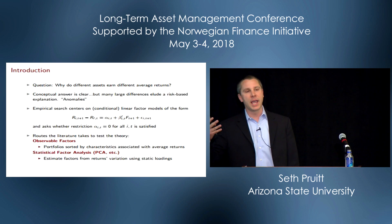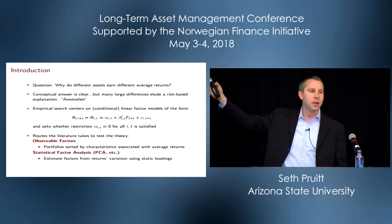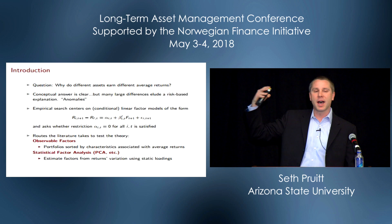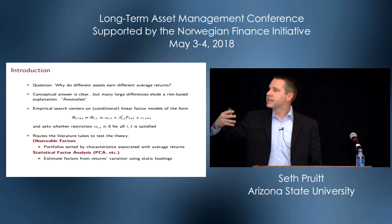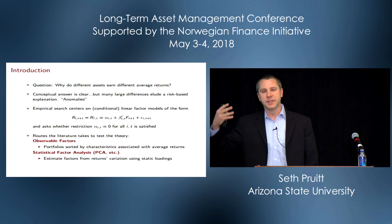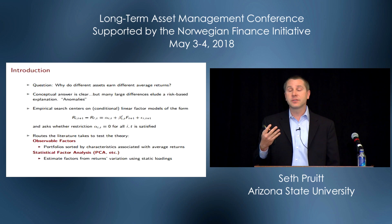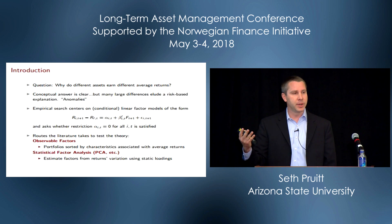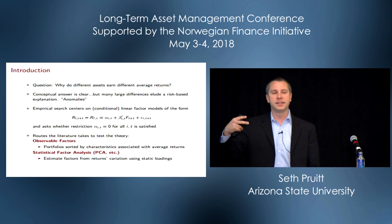When we measure this, we have in mind a conditional linear factor model where the excess return at time t+1 is related to an alpha — something known at time t — plus a beta, some exposure also known at time t, times a realization of the systematic risk. Asset pricing theory tests really want to ask: is alpha zero for all assets in all time periods?